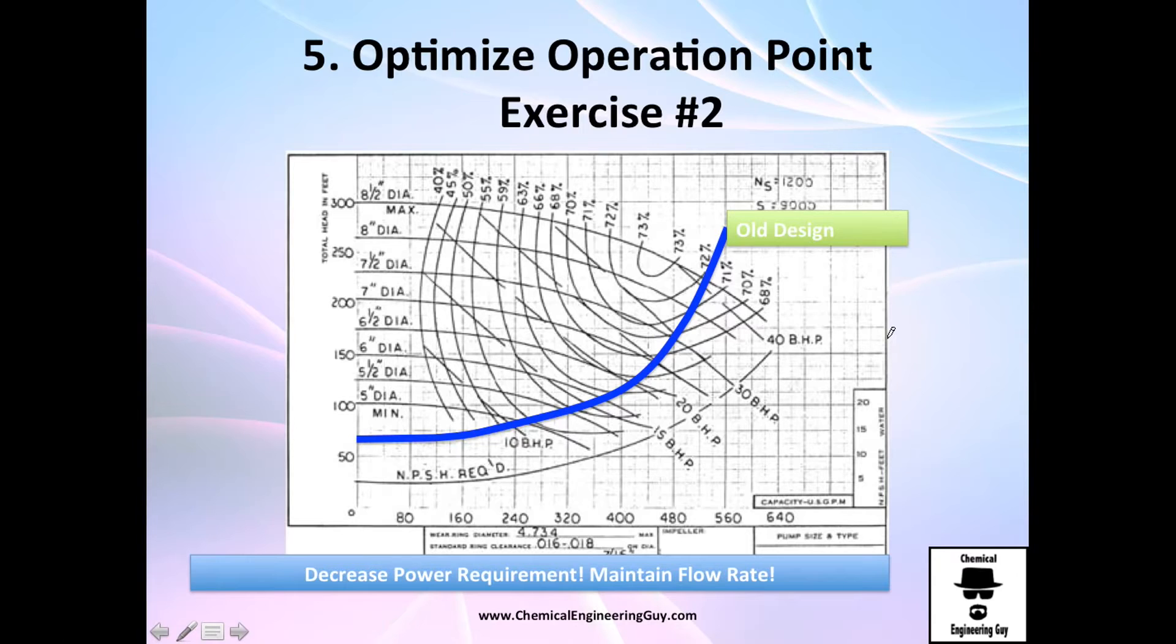Now they tell you this exercise number two, optimization or optimizing the point of operation: decrease power requirements, maintaining the flow rate. So that's an interesting one. We have the flow rate, we need to know what diameter or where are we, and we are right here. We're using a 7.5 inch diameter impeller, so this is the operation point.